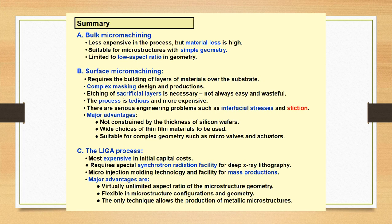This is the comparison between bulk micromachining, surface micromachining, and the LIGA process. Bulk micromachining is less expensive in the process, but the material loss is very high. It's suitable for microstructures with simple geometry, limited to low aspect ratios in geometry.